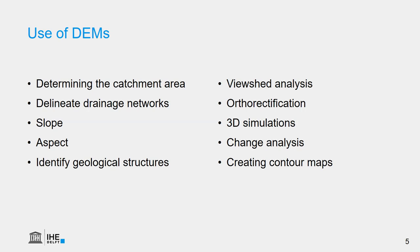We can use DEMs to identify geological structures, because abrupt changes in elevation indicate a change in geology. We can use DEMs for viewshed analysis — viewsheds are the areas that can be seen from a point, or to determine which point you can see from a certain area, very useful for military purposes or spatial planning. Another use of DEMs is orthorectification — the georeferencing of aerial photographs or satellite images that accounts for relief displacement.